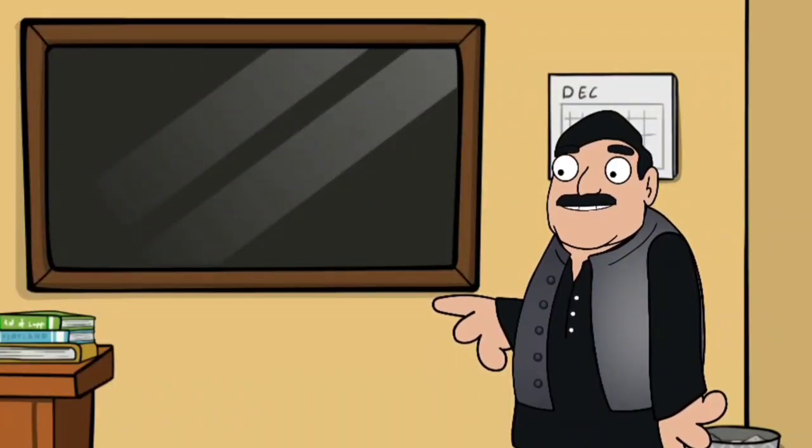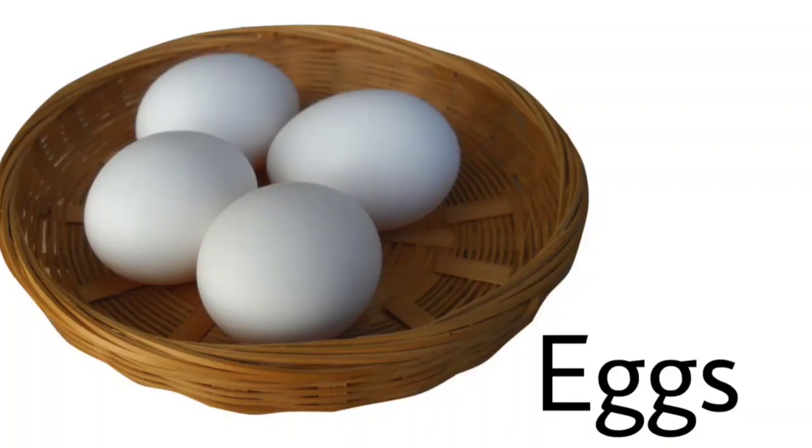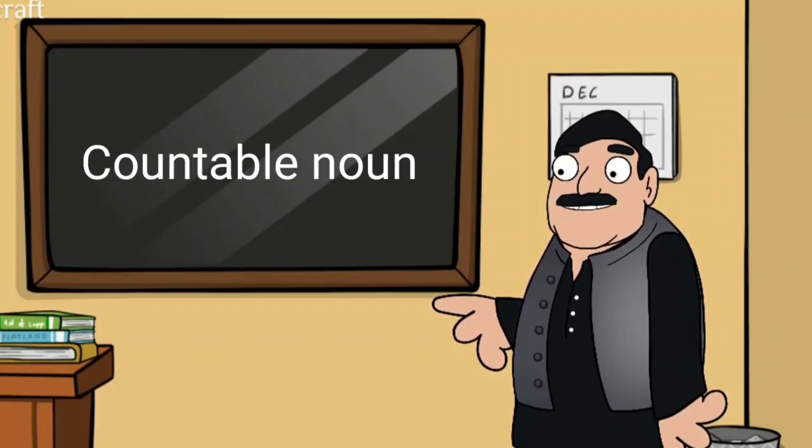Wait. There is one more thing you need to know about nouns. What is that? Some nouns are countable and some nouns are uncountable. Can you explain that? Yes, of course. Can you count how many? Yes. One, two, three, four eggs. Good. You can count eggs. So eggs is a countable noun. If you can count something, it's countable.